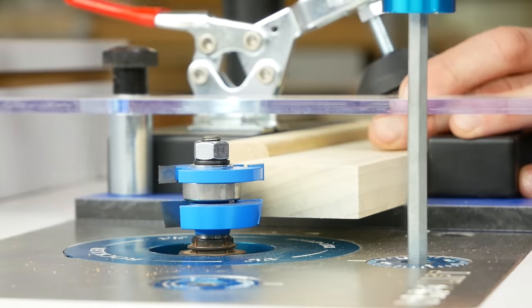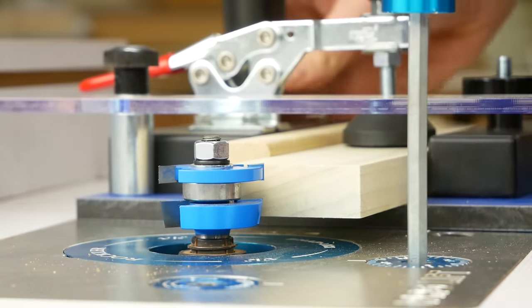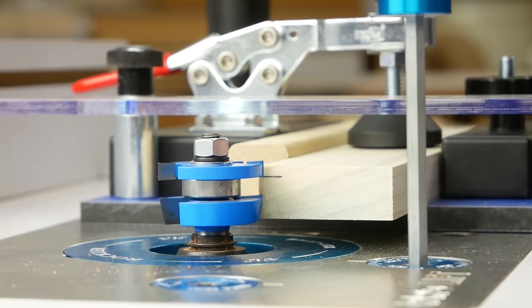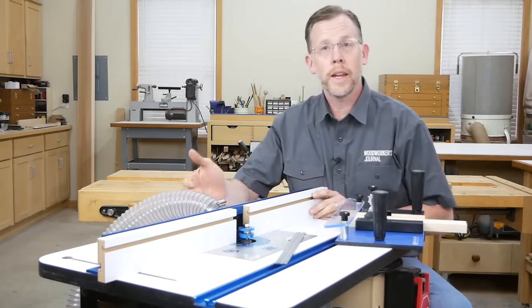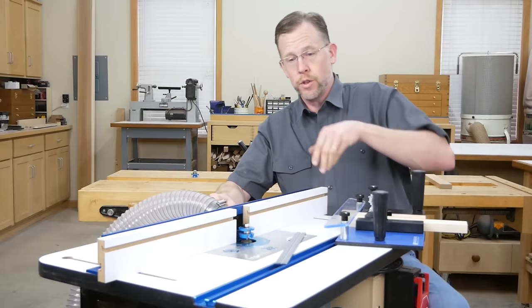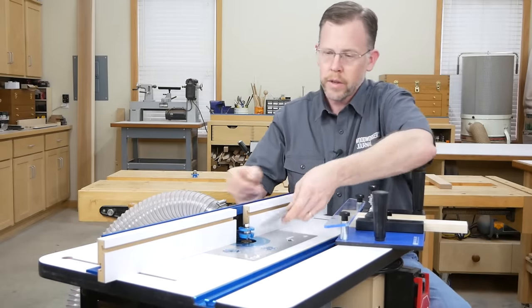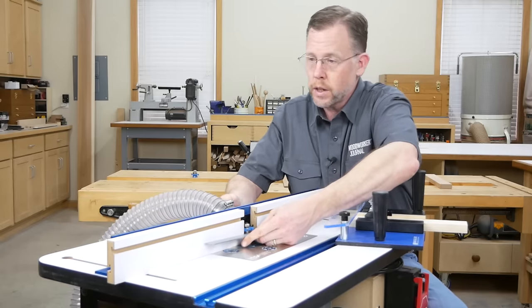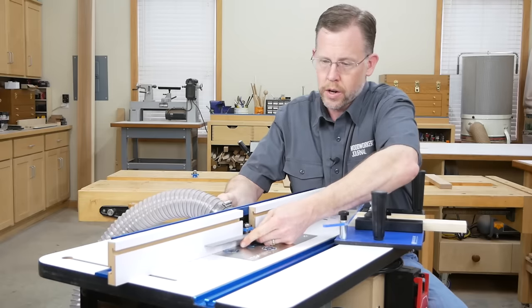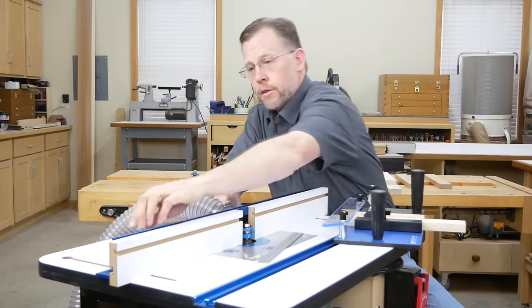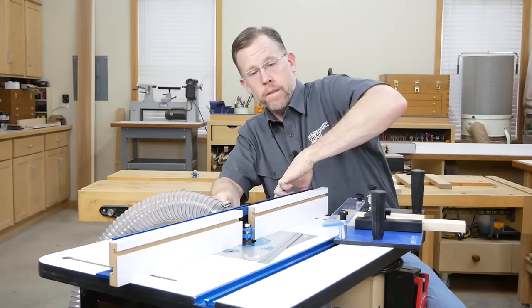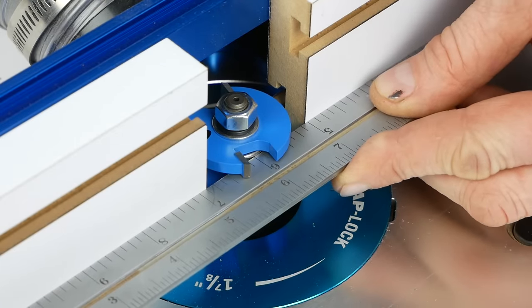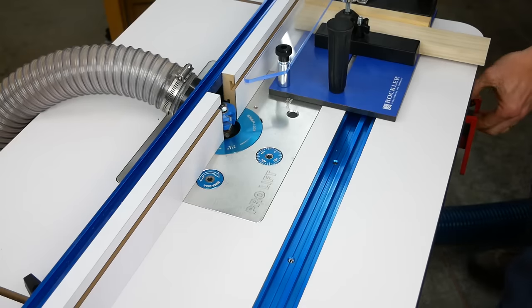To dial in the height of the coping bit, set a test scrap on the sled and raise or lower the bit until the bottom edge of the top cutter is about 1 1/8 inch down from the top edge of the scrap. Now we need to set the depth of cut. Take a straight edge, set it against the rim of the bearing, and slide your router table fence over until it makes contact with the straight edge. Then lock the fence and double check your settings.